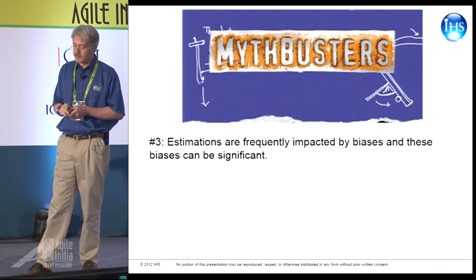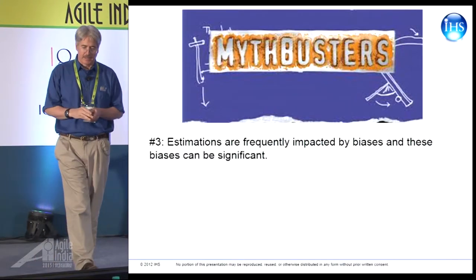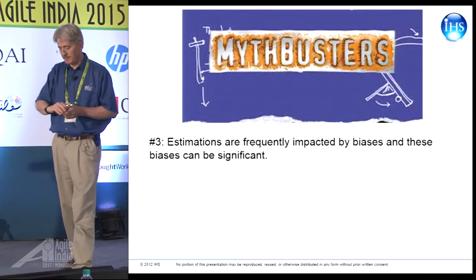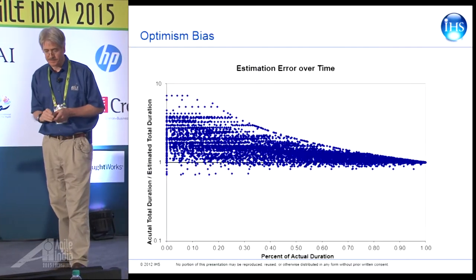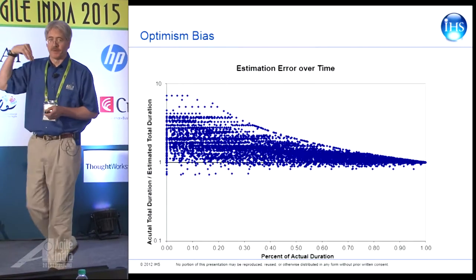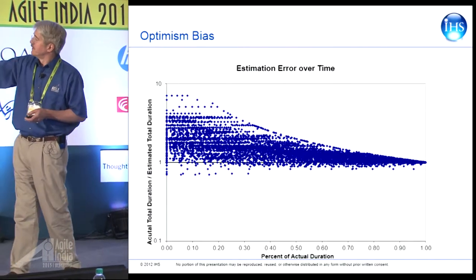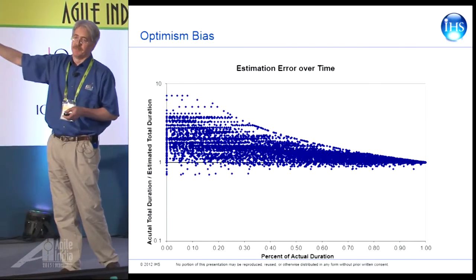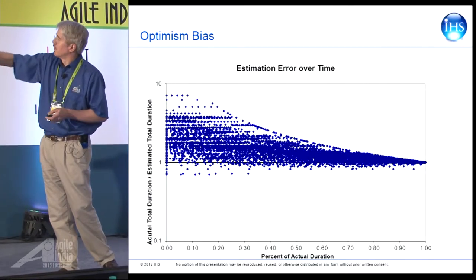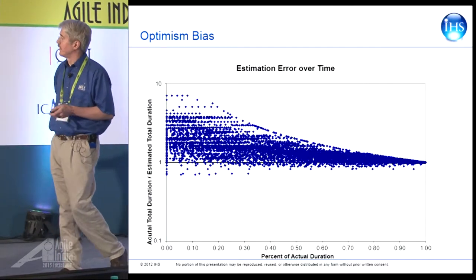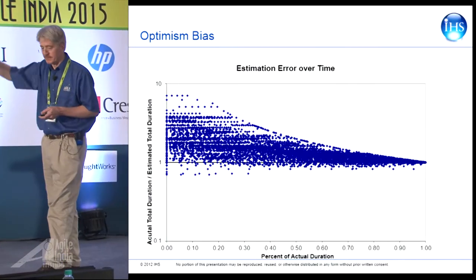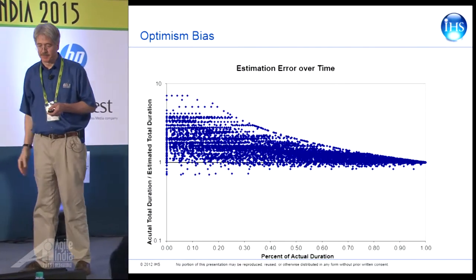Myth three: estimations are frequently impacted by biases and these biases can be significant. Going back to the data, there's a clear optimism bias — we're only looking at the upper half of the cone. So yes, absolutely, there's an optimism bias.